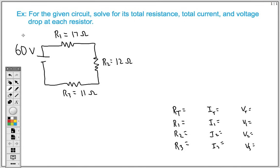In our example problem here, basically what they want us to be able to find for our given circuit is we want to be able to solve for its total resistance, its total current, and the voltage drops at each resistor. I'm going to give you a lesson on how we can do that.